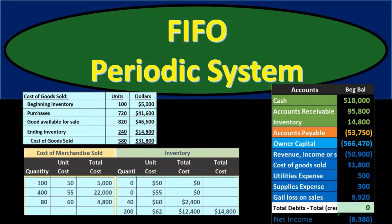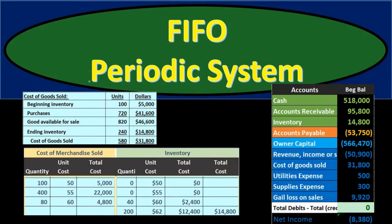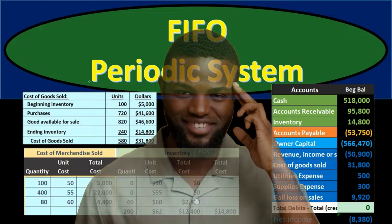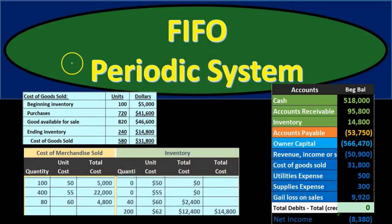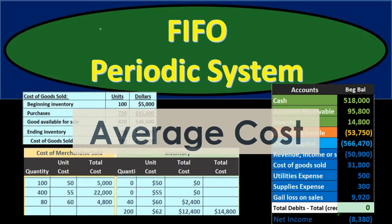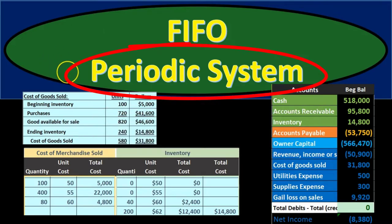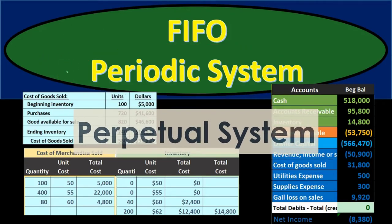In this presentation we will discuss first in first out, or FIFO, using a periodic system as compared to a perpetual system. We want to keep in mind that we are using first in first out as opposed to other systems like last in first out or average cost, and we're doing so using a periodic system rather than a perpetual system.